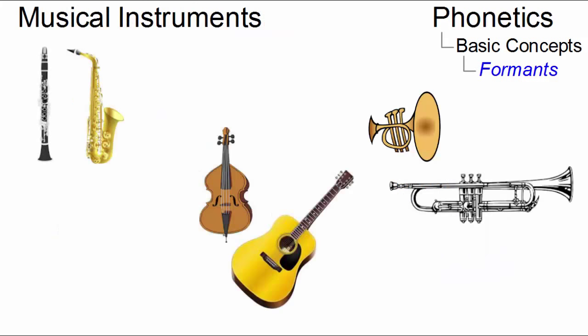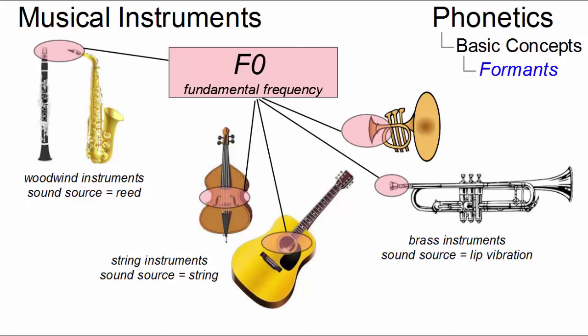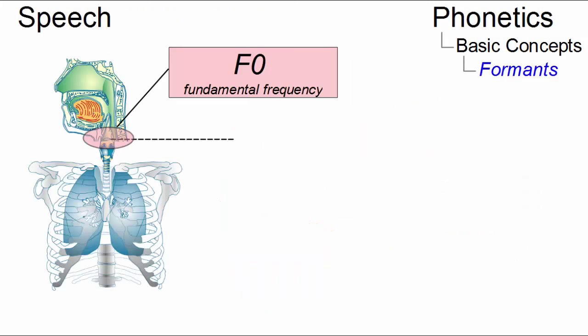On a musical instrument, F0 is the result of the vibration of a piece of reed, a string, or lip vibration. In speech, F0 is the result of vocal fold vibration.